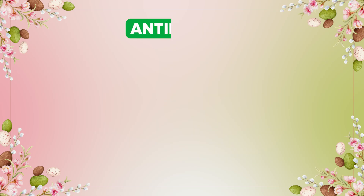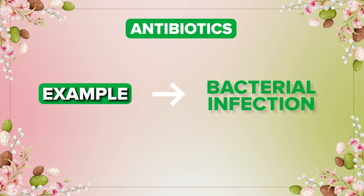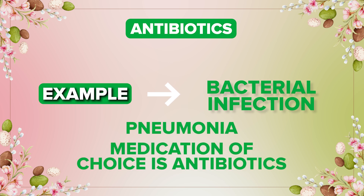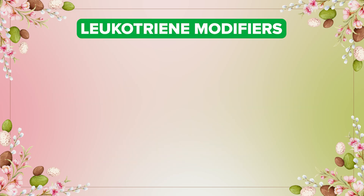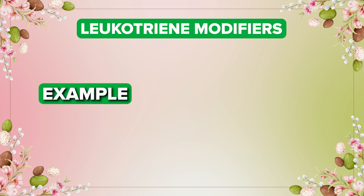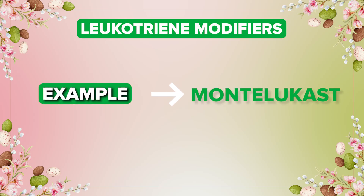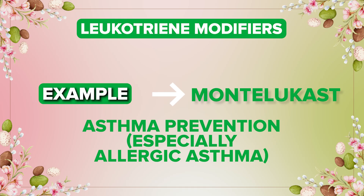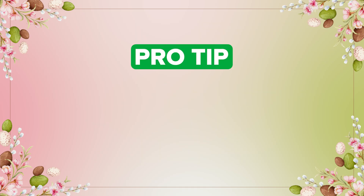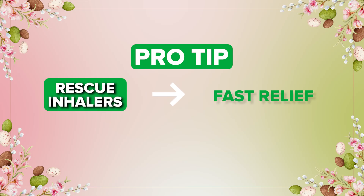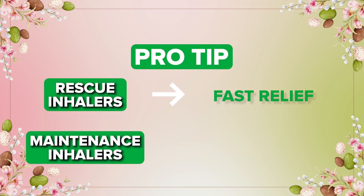Antibiotics are also used to treat respiratory issues — for example, if a patient has a bacterial infection like pneumonia, antibiotics are the medication of choice. Another medication is leukotriene modifiers; the example is montelukast, used for asthma prevention, especially allergic asthma. Pro tip: rescue inhalers are for fast relief, while maintenance inhalers are for long-term control — very important to remember.